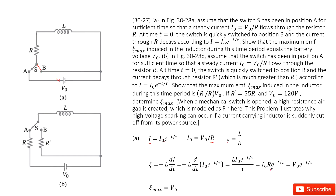Doing the calculation, we find the EMF looks like this: I0 times R equals V0. From this equation, when is epsilon maximum? Of course at the very initial moment, when t equals 0. So the maximum EMF is just V0. This is part A.